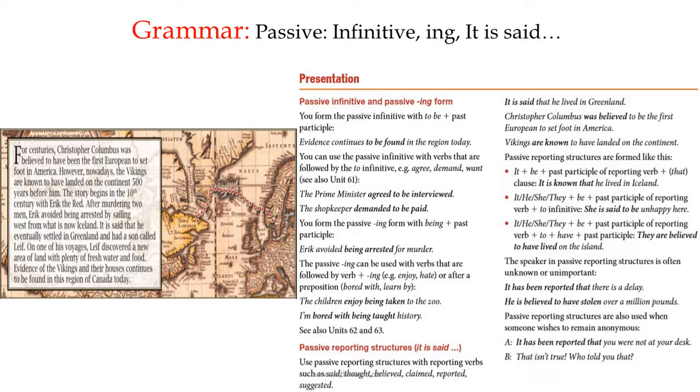You form the passive ing form with being plus past participle. For example: Eric avoided being arrested for murder. That's being, a gerund or verb plus ing, plus arrested, the past participle of the verb arrest.